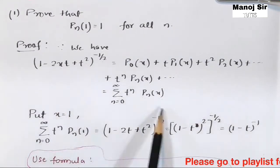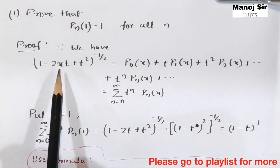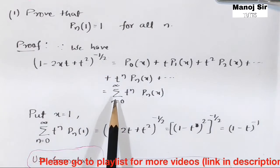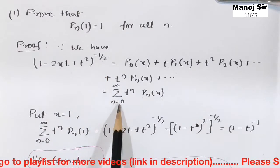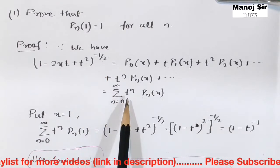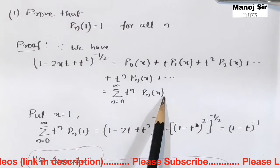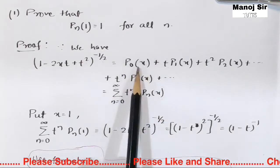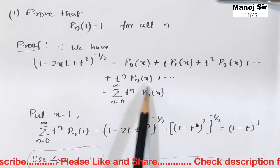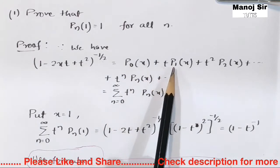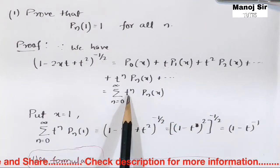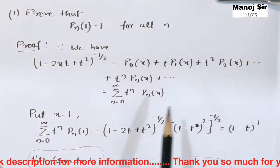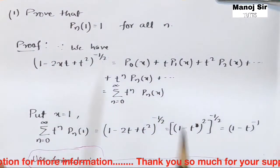In the previous video we proved that (1 - 2xT + T²)^(-1/2) equals the summation from n=0 to infinity of T^n·P_n(x). If you put n=0 you get P_0(x); n=1 gives T·P_1(x); n=2 gives T²·P_2(x), and so on.